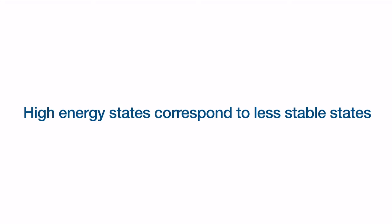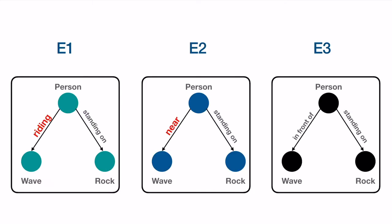we want to learn energy functions such that plausible scene graph configurations have lower energy when compared to less likely scene graphs. In the example we saw before, we want to learn an energy function such that e1 < e2 < e3, where the ground truth scene graph on the right has the least energy and an unlikely scene graph like the one on the left has a high energy value.